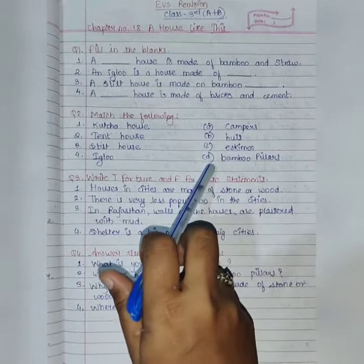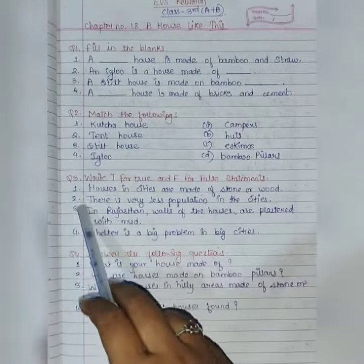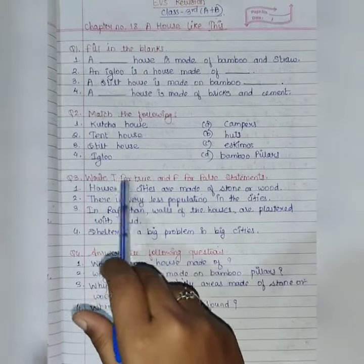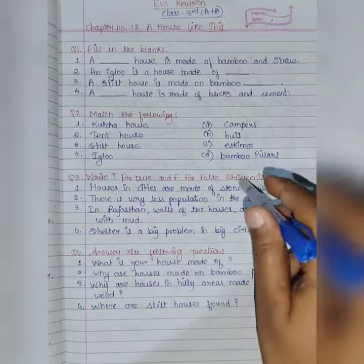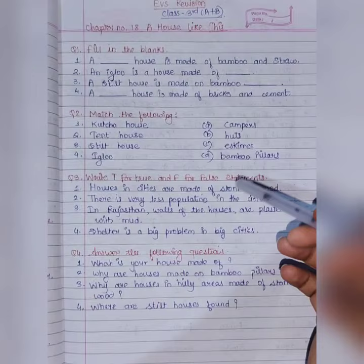Next, question number three, write T for true and F for false statements. You have to give in the following statement and you have to identify whether the statement is true or whether the statement is false.